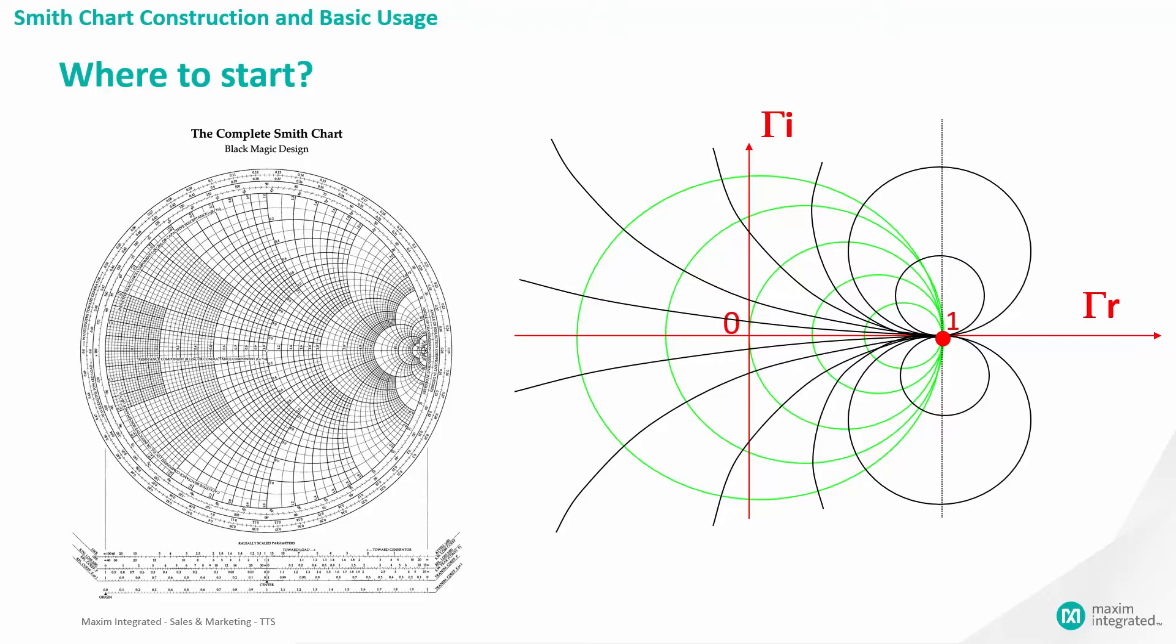Before developing anything yet, you can observe that all the curves are circles, complete or partial, that can be grouped into two sets, green ones and black ones, shown on the right side of the slide.